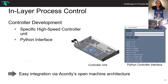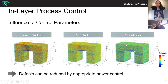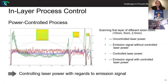That brings us to in-layer process control. We developed a specific high-speed controller for that, and gave it a Python interface which allows you to choose different controlling values — namely PID: proportional, integral, and differential. If you do so, you can easily integrate that into all of our Econity machines due to the open machine architecture. For the non-controlled bridge, we see a little bit fuzzy and different colors, with defects in the front. If we apply a P value, the temperature distribution — that is, emissivity — is a lot more homogeneous, with less pronounced defects. If we add an I value to the controller, we get an even more homogenized reading of our bridge. Defects can be reduced by appropriate power control.